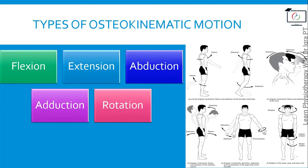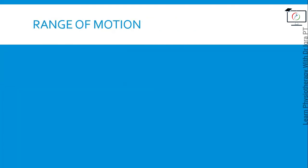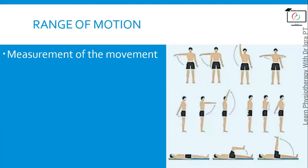Before moving further, we should know about some basic terms. Range of motion is the range of movement a bone moves during movement. It is the measurement of the movement — how much movement occurs at a joint in one plane. For example, how much flexion occurs at an elbow joint, or how much extension occurs at an elbow joint.